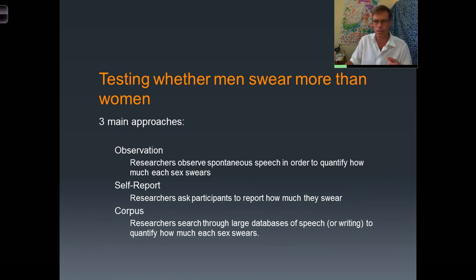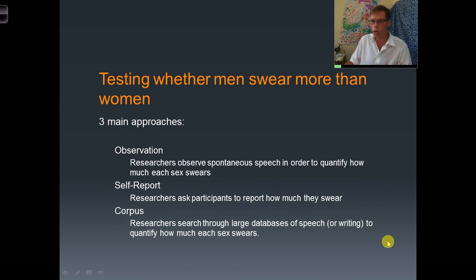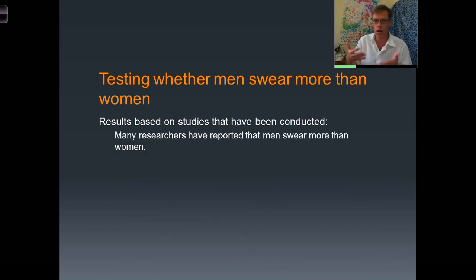Self-reported data can be interesting but it's not always reliable, so it's not the best choice when you want clean data. Corpus data is really nice because it's searchable and you can get a lot of data at once, but there are problems — the source can be difficult, most of it is written, and most of it is public rather than private speech or writing. All of these approaches have their problems, but together hopefully we can make some headway toward answering our question.